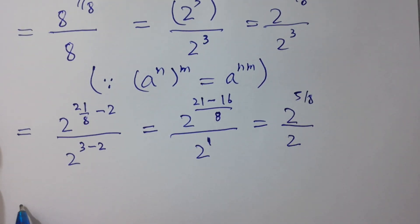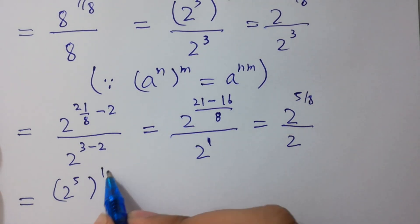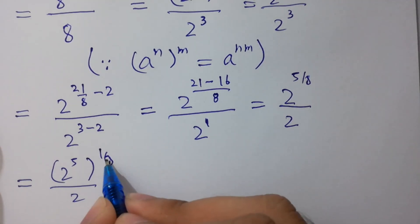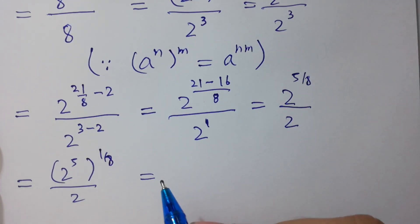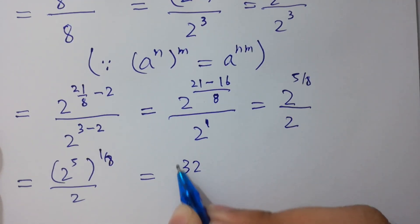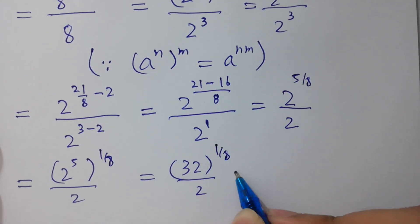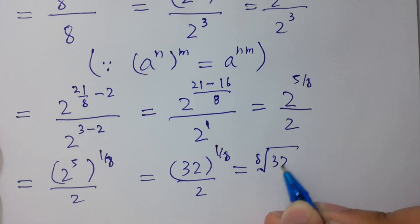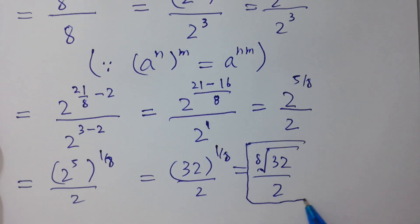We can write 2 to the power (5/8) to the power (1/8), divided by 2. Next, 2 to the power 5 equals 32, so we have the 8th root of 32 over 2. So the 8th root of 32 over 2 is the correct answer.